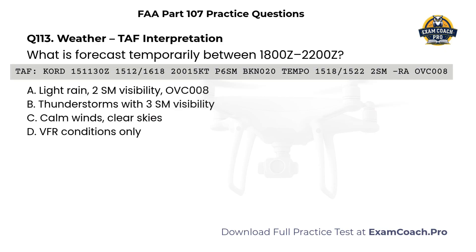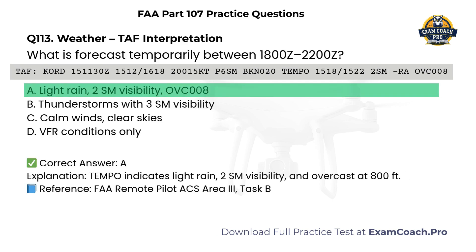Weather. TAF interpretation. Refer to the TAF: KORD 151130Z, valid from 1512 to 1618, winds 200 at 15 knots, visibility greater than 6 statute miles, broken clouds at 2,000. Temporary from 1800 through 2200: 2 statute miles, light rain, overcast 800. What is forecast temporarily between 1800 Zulu and 2200 Zulu? A. 2 statute miles visibility, overcast 800. B. Thunderstorms with 3 statute miles visibility. C. Calm winds, clear skies. D. VFR conditions only. Correct answer: A. TEMPO indicates light rain, 2 statute miles visibility, and overcast at 800 feet.